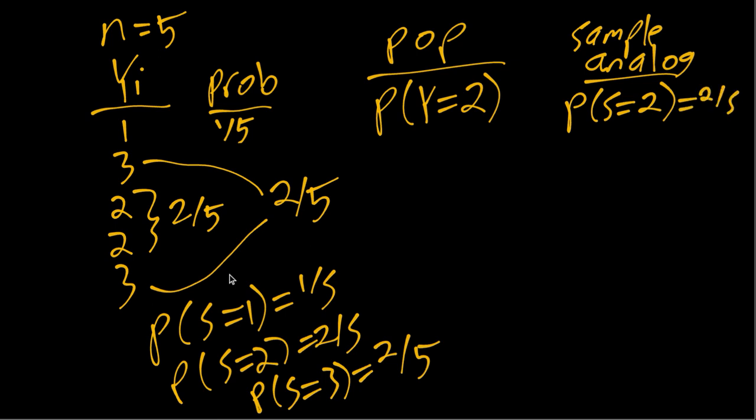And again, sometimes the sample analog we would write the population feature but put a hat over either the p or sometimes the whole thing. That's not a very pointy hat. Let's make it a little point here. Something like that to indicate it's from the sample.